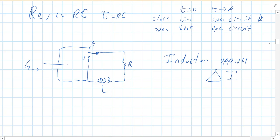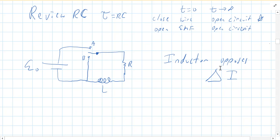The job of an inductor in a circuit is that it opposes changes in current. Notice it doesn't oppose current — it opposes changes in current. So in essence, it wants to keep current the same. If current is trying to increase in your circuit, the inductor will try to reduce it. On the flip side, if the current is trying to decrease, the inductor will try to increase it.